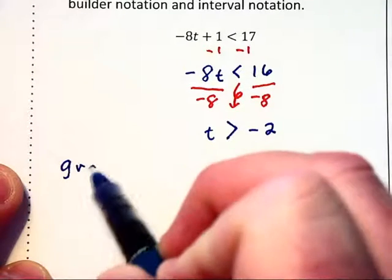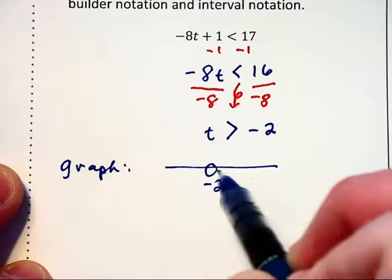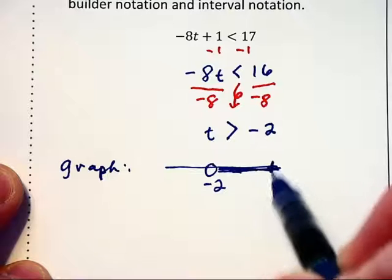Graphing this on a number line, we will have an open circle at negative 2 with all the values to the right of it shaded.